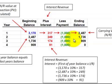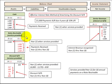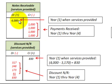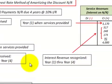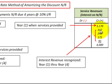Now let's look at how we record notes receivable — an asset on the balance sheet — and the related interest revenue on the income statement. We start with a four-thousand-dollar debit to notes receivable when services are provided. We also record a discount on notes receivable, which is a contra account that reduces notes receivable. The discount starts at eight hundred thirty dollars — the difference between four thousand and the present value of thirty-one seventy. Each year we reduce the discount by the interest earned: a debit to discount on notes receivable and a credit to service revenues.